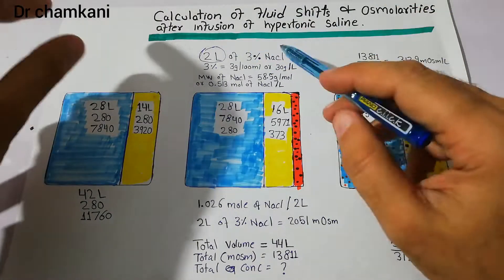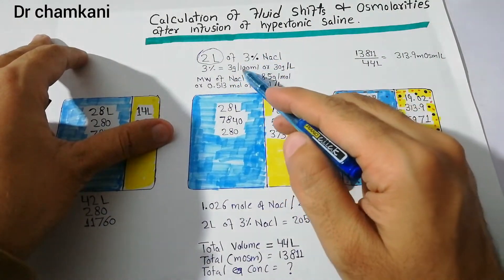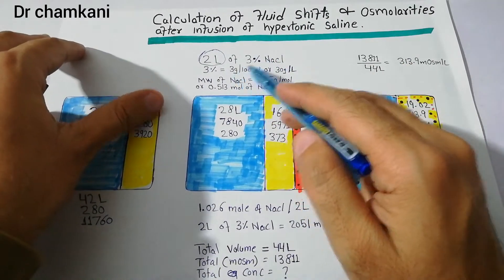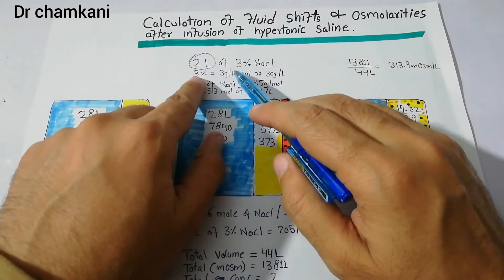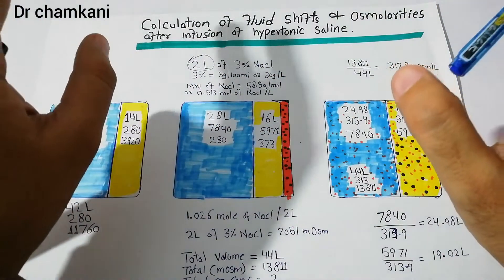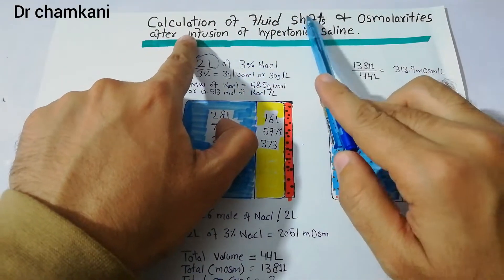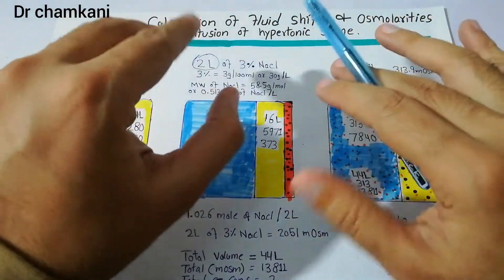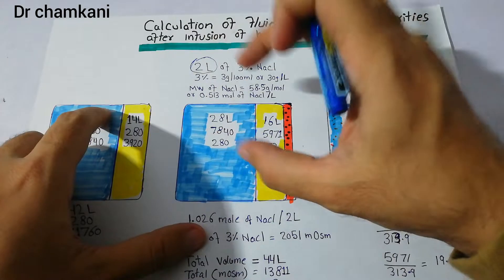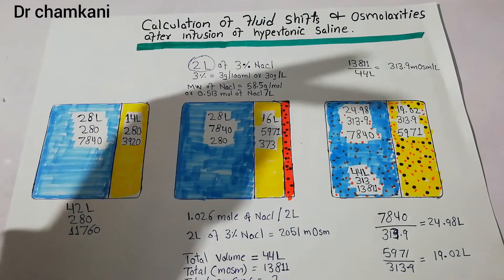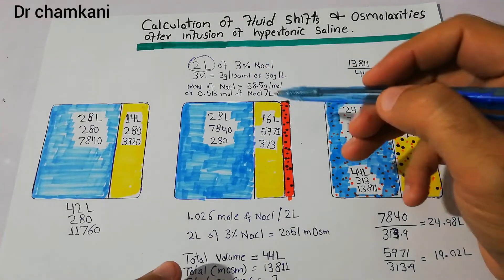Three percent sodium chloride means 3 grams of NaCl per 100 ml, or 30 grams per liter. Before infusing we must know the volume, osmolarity, and number of milliosmoles we are injecting. Since we inject into the vein, the fluid goes into the extracellular fluid compartment — plasma — and remains there for the initial few minutes, not entering the intracellular compartment directly.